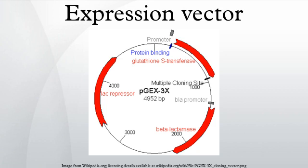Elements of expression vectors: An expression vector has features that any vector may have, such as an origin of replication, a selectable marker, and a suitable site for the insertion of a gene such as the multiple cloning site. The cloned gene may be transferred from a specialized cloning vector to an expression vector, although it is possible to clone directly into an expression vector.